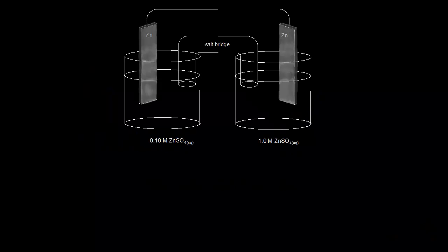A concentration cell is a cell that has the same electrodes on both sides. Here we have a zinc electrode on the left and a zinc electrode on the right. The only difference is the concentration. On the left side, there's a 0.10 molar solution of zinc sulfate, and on the right side, there's a 1.0 molar solution. The left side is the less concentrated side and the right side is the more concentrated side. There's a tendency for the concentrations to be equalized, and that's enough to create a small voltage.